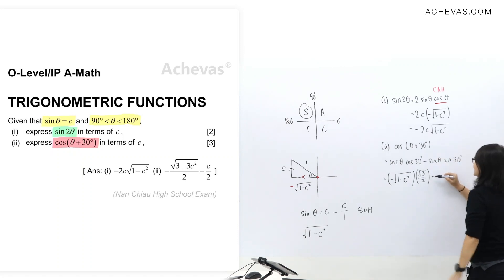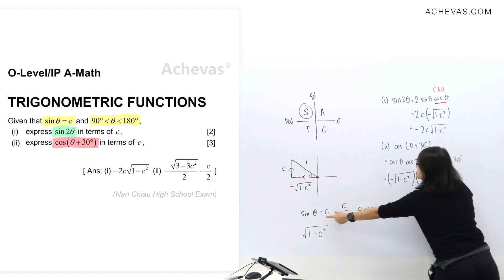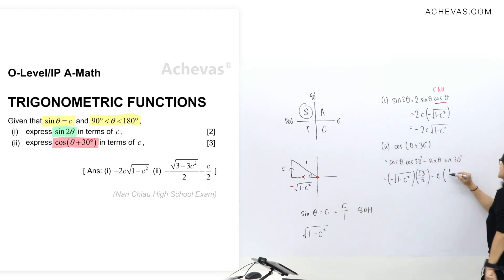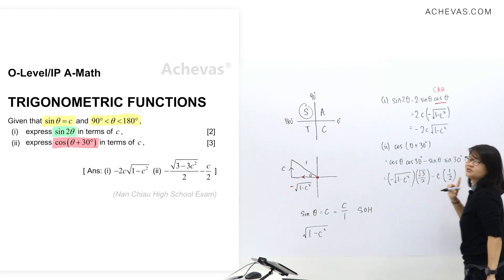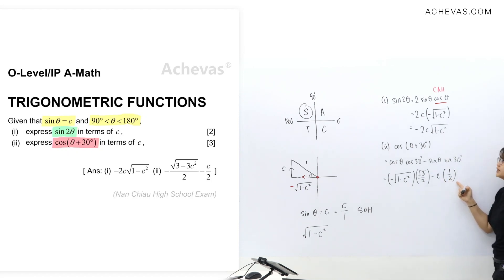So next, let's follow by sine theta value, which is this c here. And sine 30 is half. And this one, you can also click calculator for this value here. Now, let's do some simplification.